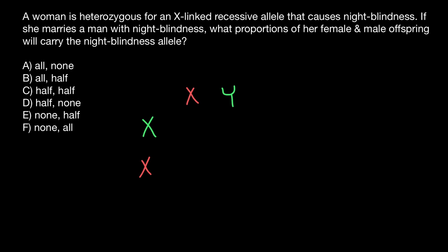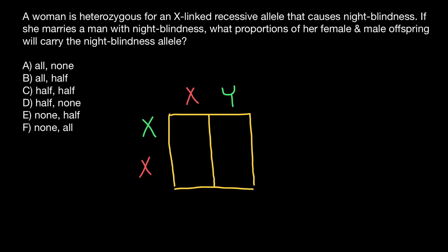Let's build a simple Punnett square and look at the progeny genotypes and phenotypes. The first female would inherit one normal X chromosome from the mother and a defective X chromosome from the father. The first male would inherit one normal X chromosome from the mother and a normal Y chromosome from the father. The second female would inherit a defective X chromosome from the mother and a defective X chromosome from the father. The second male would inherit a defective X chromosome from the mother and a normal Y chromosome from the father.